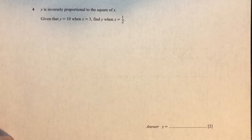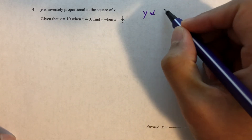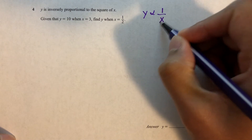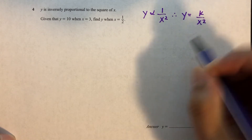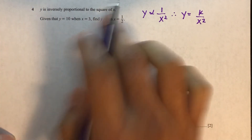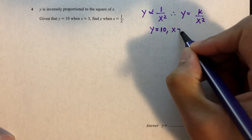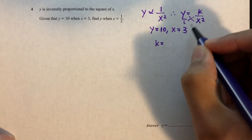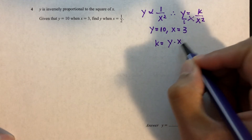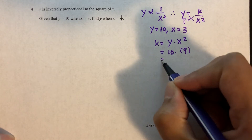Question number 4: y is inversely proportional to the square of x. So y equals k over x squared. We're given y equals 10 when x equals 3. To find k: k equals y times x squared, which is 10 times 9, so k equals 90.